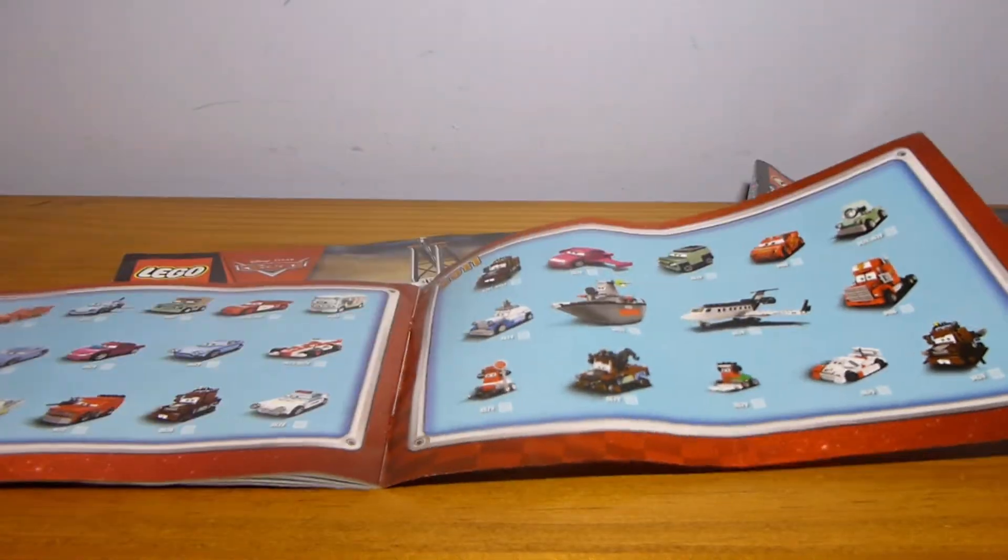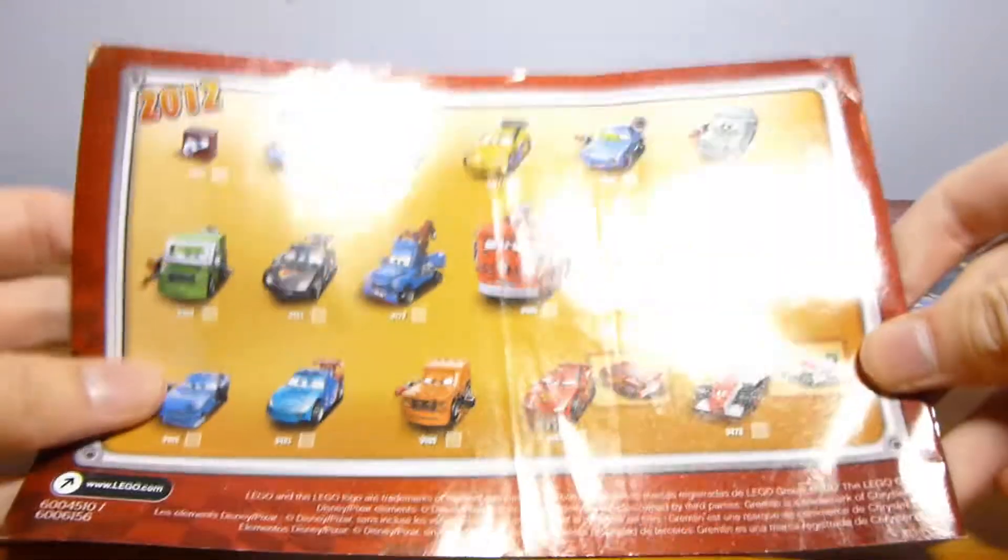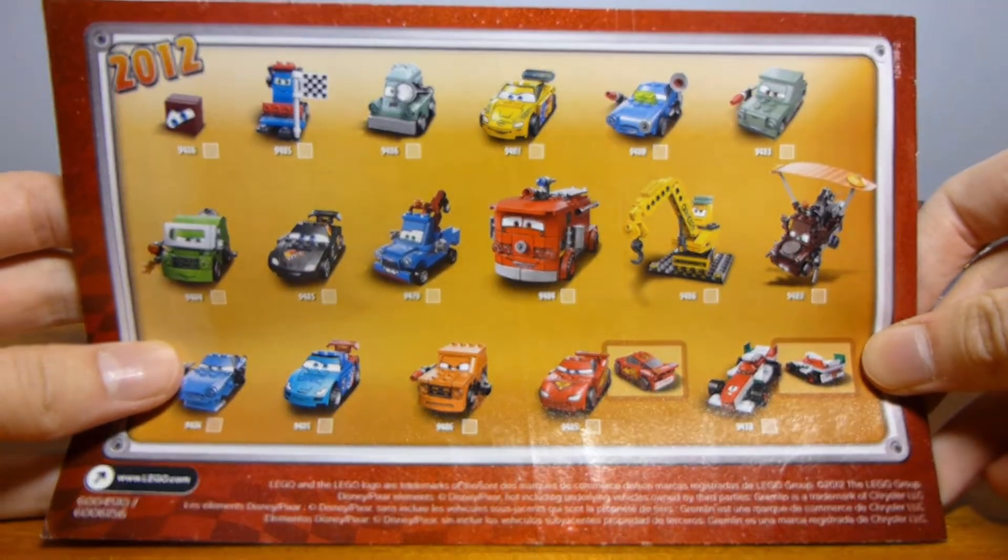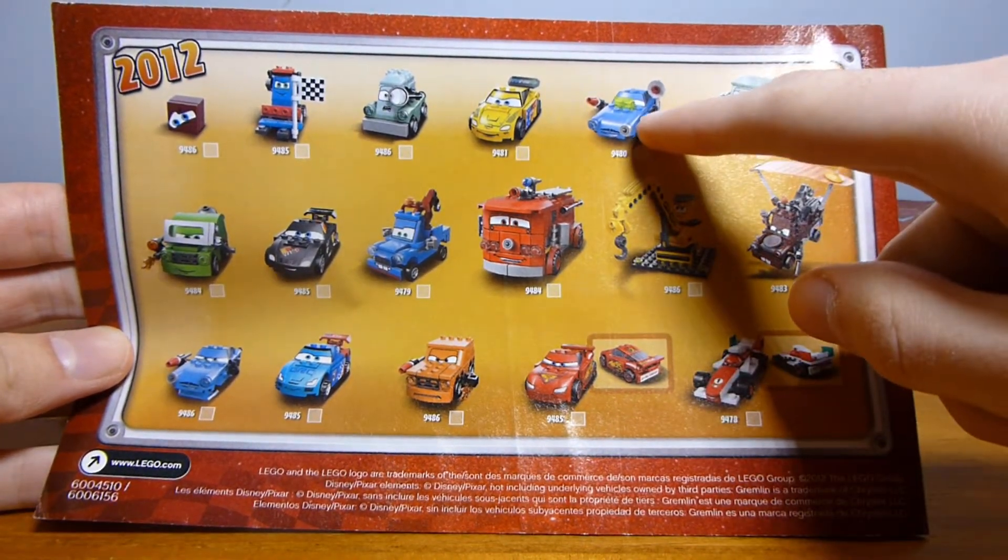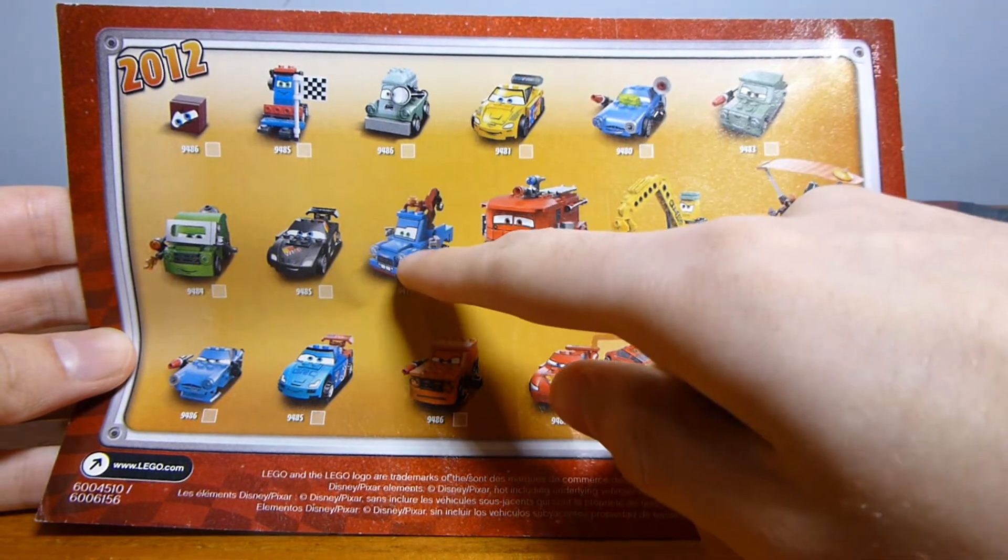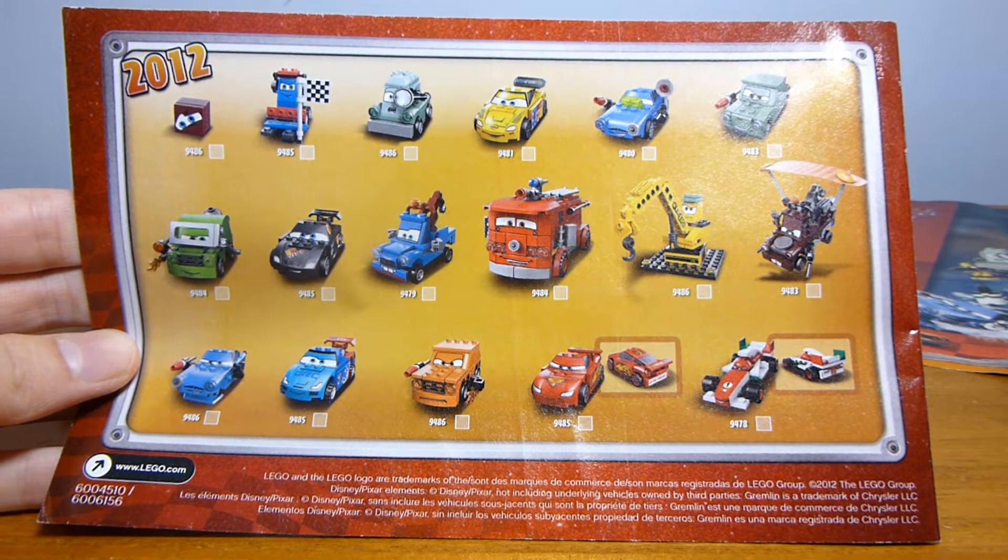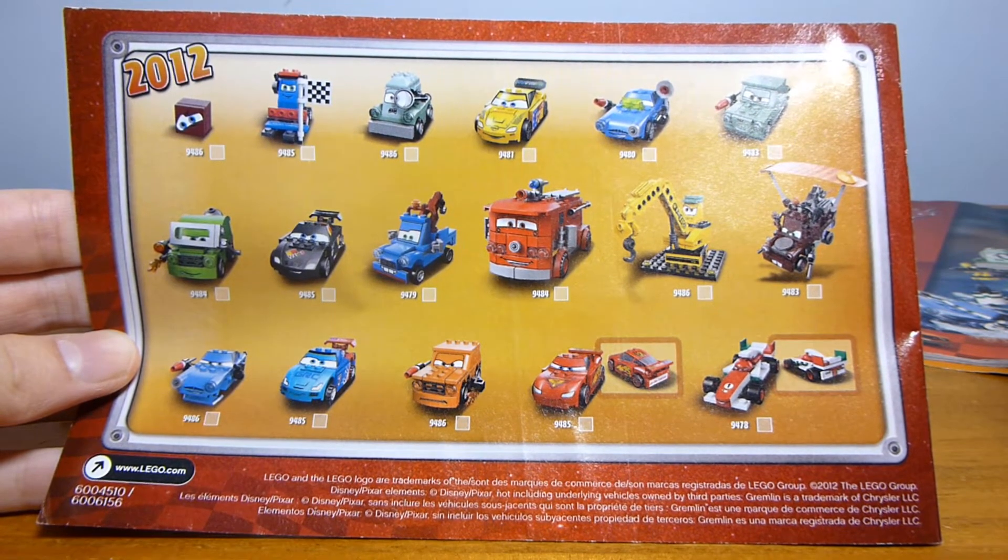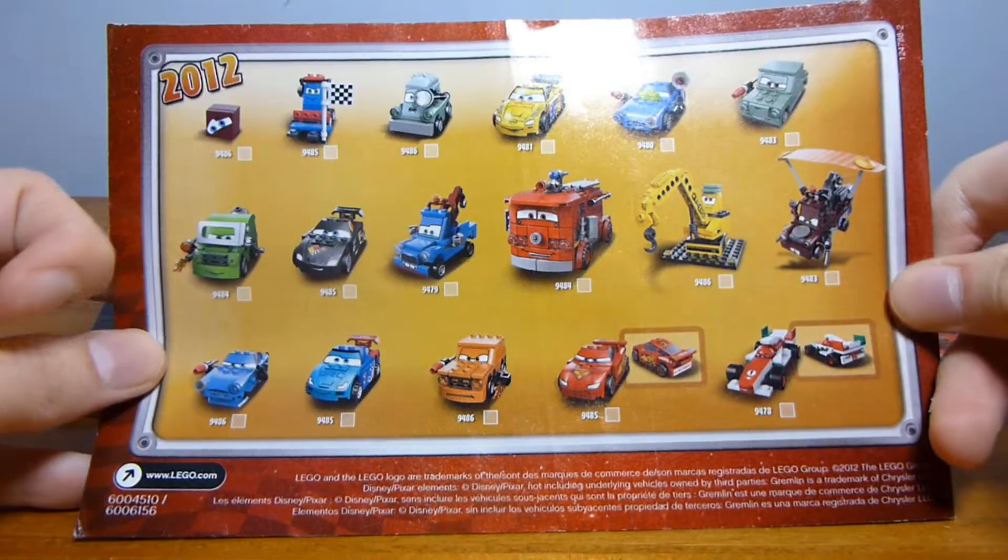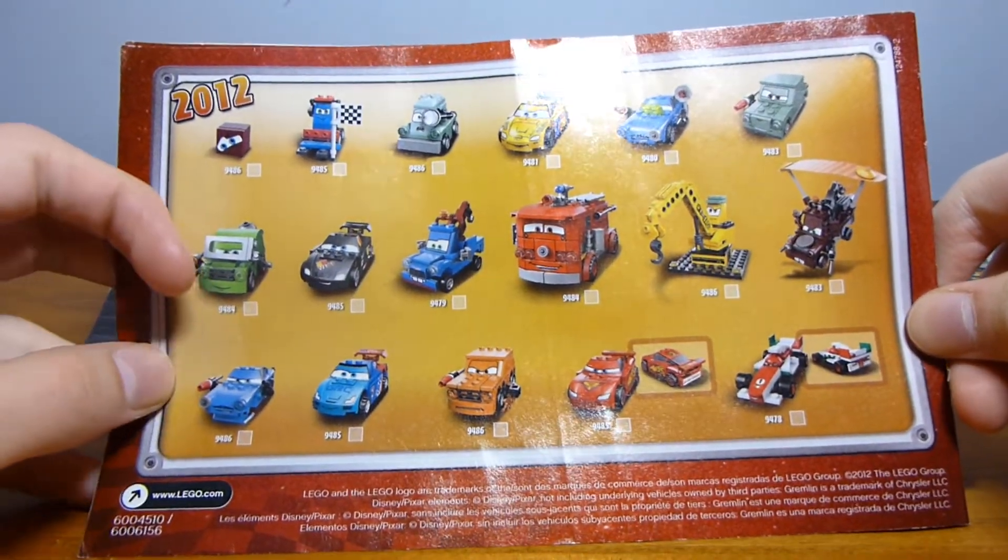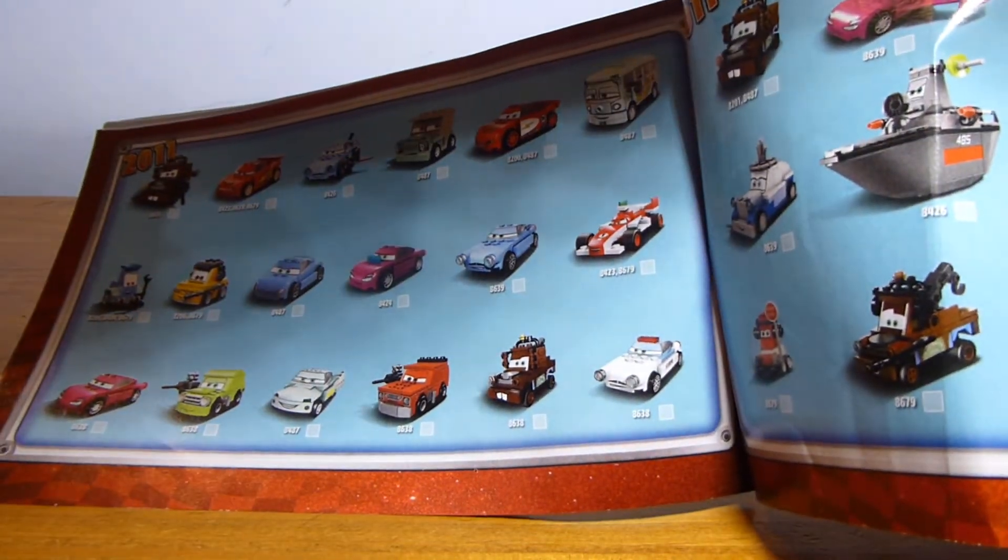The second book moves us into building Grem and a little helipad, as well as Leland Turbo, who's the best character. This one has a checklist of all the cars and vehicles, including all of the characters from 2011 plus a checklist for all the 2012 characters. I do have all of the 2011 cars.